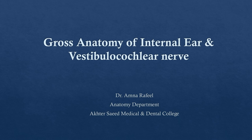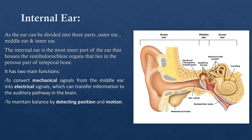Assalamu alaikum students. On behalf of the anatomy department of the State Medical and Dental College, I'm Dr. Rana Rafi, and I welcome you all to today's lecture on the gross anatomy of the internal ear and vestibulo-cochlear nerve. The ear is divided into the outer ear, middle ear, and inner ear. The inner ear houses the vestibular and cochlear organs, responsible for hearing, equilibrium, and balance. It converts mechanical signals from the middle ear into electrical signals and maintains balance by detecting position and motion.